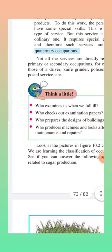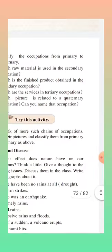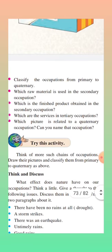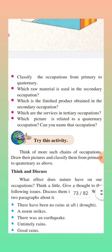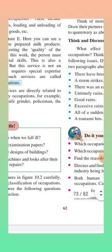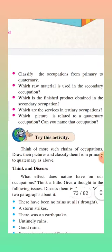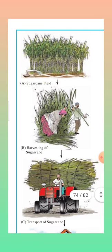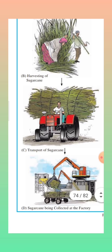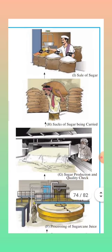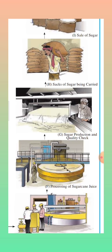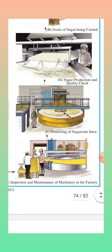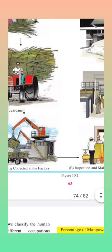Look at figure 10.2 carefully — we are learning the classification of occupations. See if you can classify the following related to sugar production from primary to quaternary. You can see sugarcane fields, harvesting of sugarcane, transporting of sugarcane, sugar collected at the factory, sale of sugar, sacks of sugar being carried, sugar production and quality checking, processing of sugarcane juice, and inspection and maintenance of machinery in the factory.